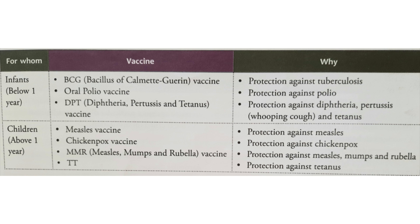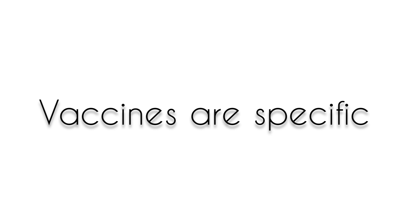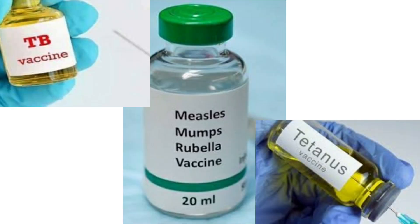Children above one year of age are given the measles vaccine, which protects against measles. The chickenpox vaccine protects against chickenpox. The MMR — Measles, Mumps, and Rubella — vaccine protects against measles, mumps, and rubella. The Tetanus Toxoid (TT) protects against tetanus. Remember that vaccines are specific — a vaccination against measles will protect against measles only, and a typhoid vaccine will protect against typhoid only.